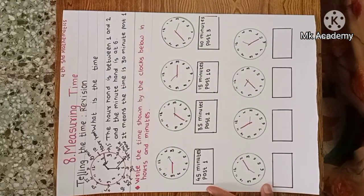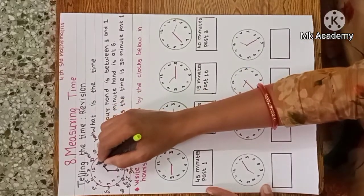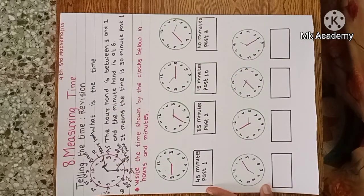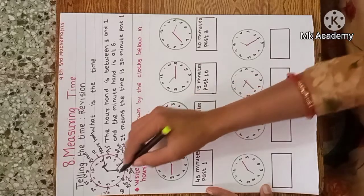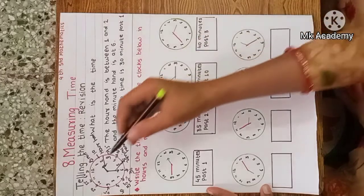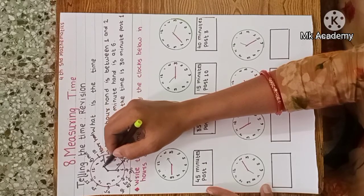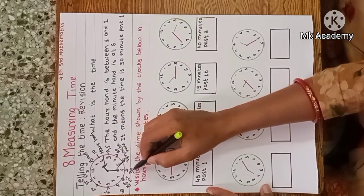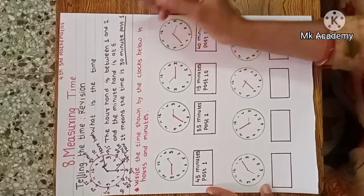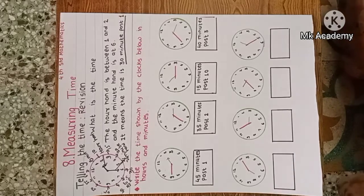Now, what is the time here? The hour hand is between one and two, and the minute hand is at six. At six, there are 30 minutes, so the time is 30 minutes past one. 'Past' means the hour hand has passed one, therefore we say past one.